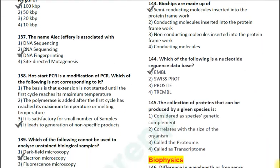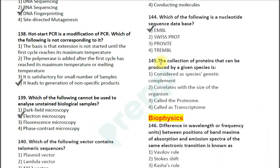Question number 145: The collection of proteins that can be produced by a given species is — option 1: considered as the species' genetic complement; option 2: correlates with the size of the organism; option 3: called the proteome; option 4: called the transcriptome. Since it is the collection of proteins, the correct answer is option 3 — the proteome.